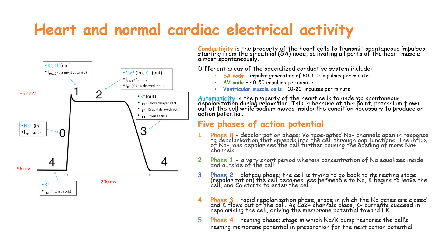On the other hand, automaticity is the property of the heart cells to undergo spontaneous depolarization during relaxation. At this point, potassium flows out of the cell while sodium moves inside the cell, and this condition is necessary to produce an action potential.